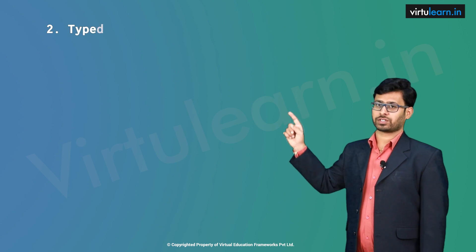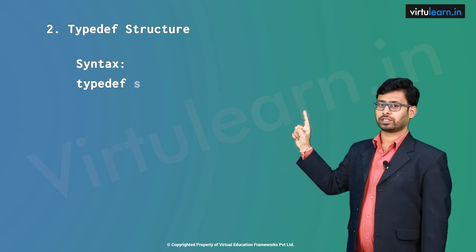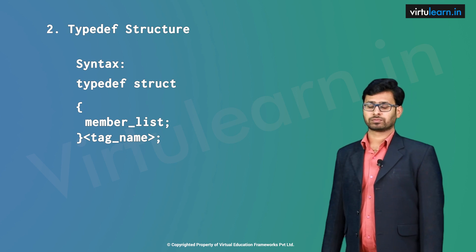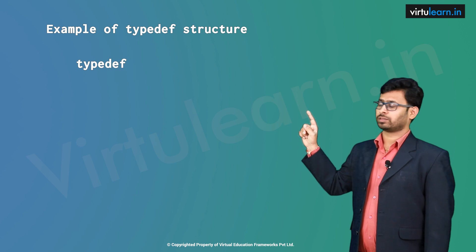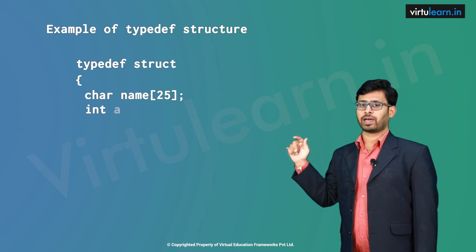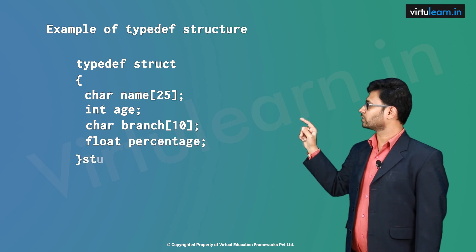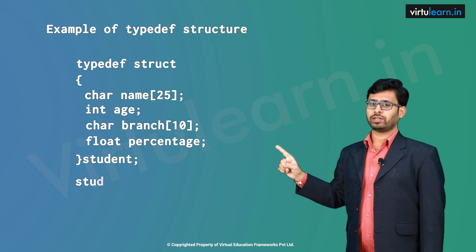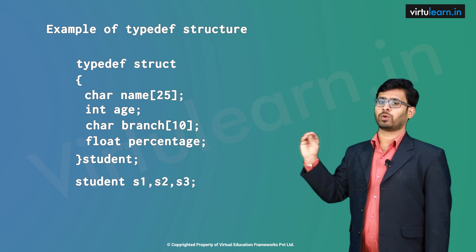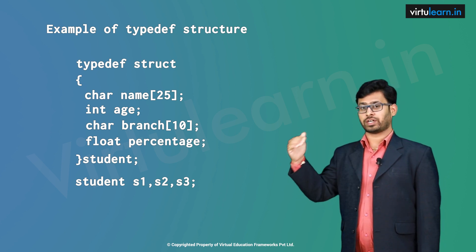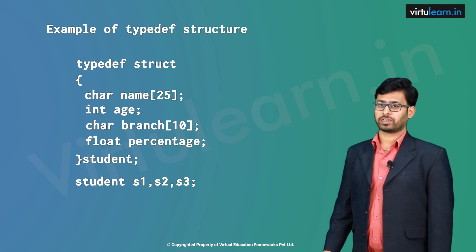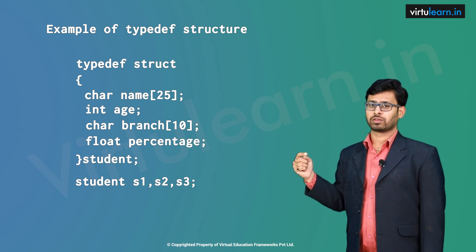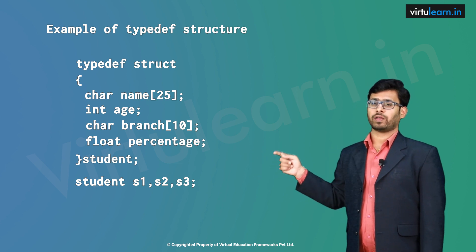Now let us see typedef structure. The syntax is 'typedef struct', within that we write the member list elements, close that, and write the tag name before putting the semicolon. For example: 'typedef struct { char name of 25; int age; char branch of 10; float percentage; } student;'. Then we write 'student s1, s2, s3'. In the earlier tagged structure case we needed to write 'struct student s1, s2, s3', but for typedef structure, since we have already defined the type as struct, we need not specify it again — we can directly write 'student s1, s2, s3'.